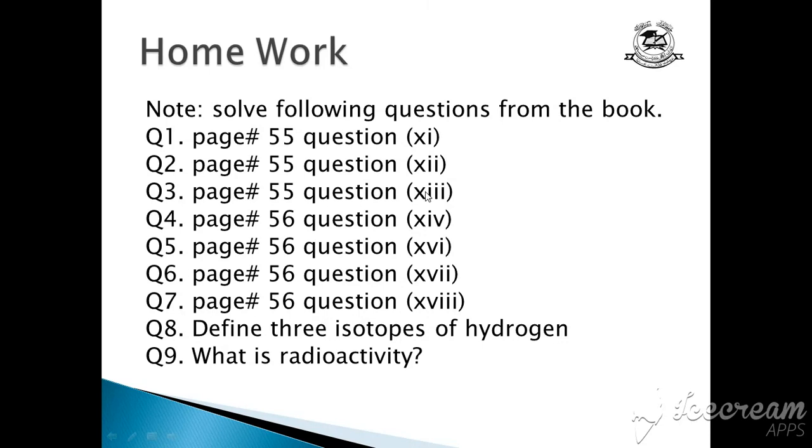And next question is question number 18: Find out the protons, neutrons and electrons in these atoms. Nitrogen, cobalt, iodine and lead. The mass number and atomic number are also given. Define three isotopes of hydrogen and then what is radioactivity. So, thank you.